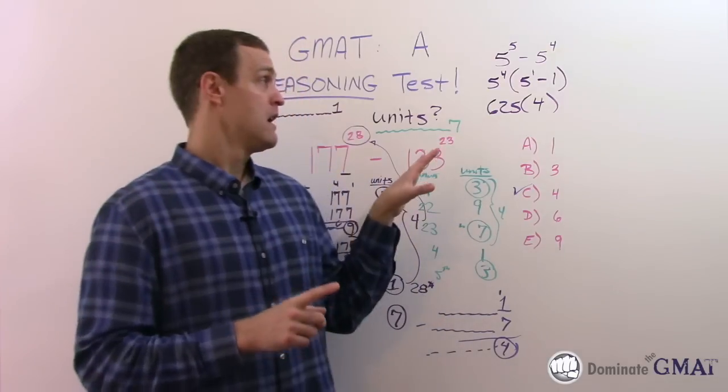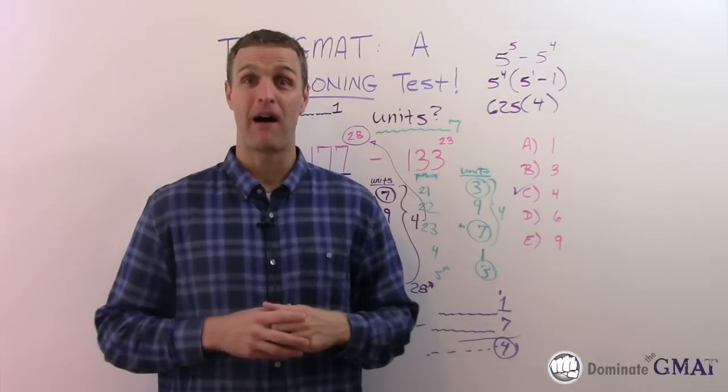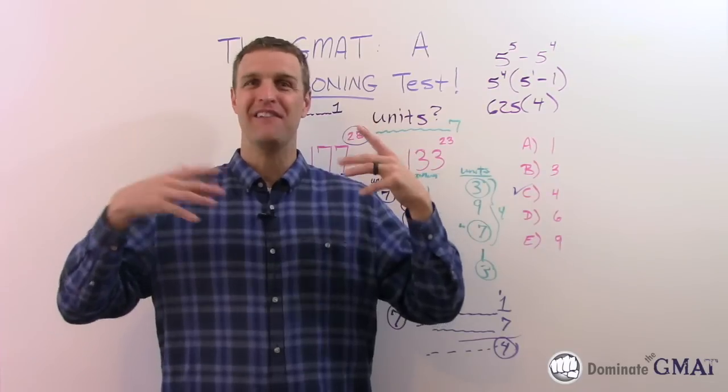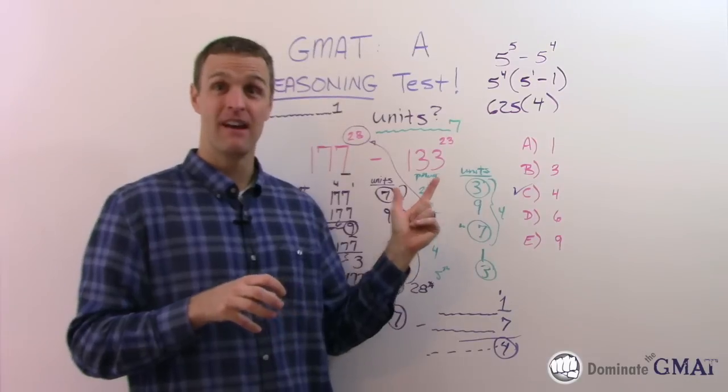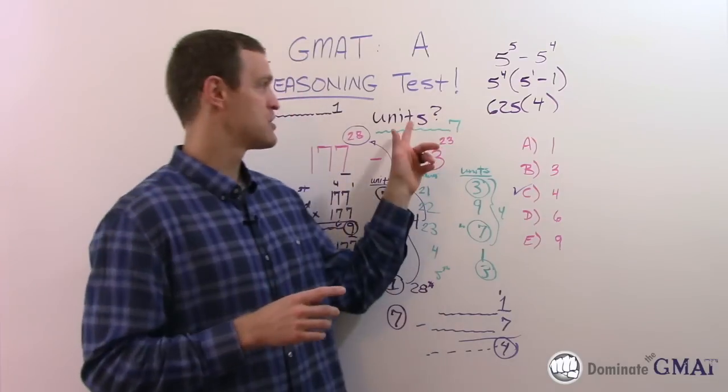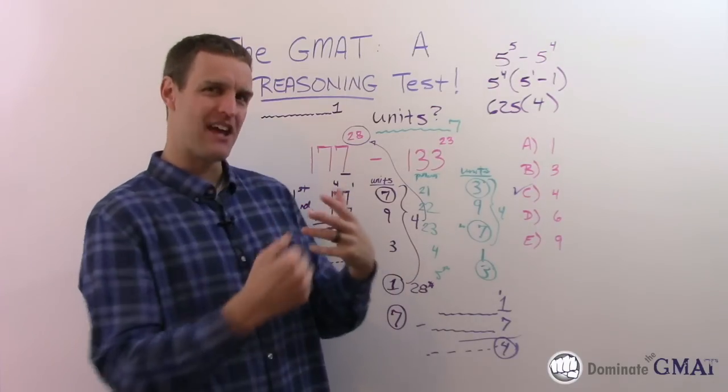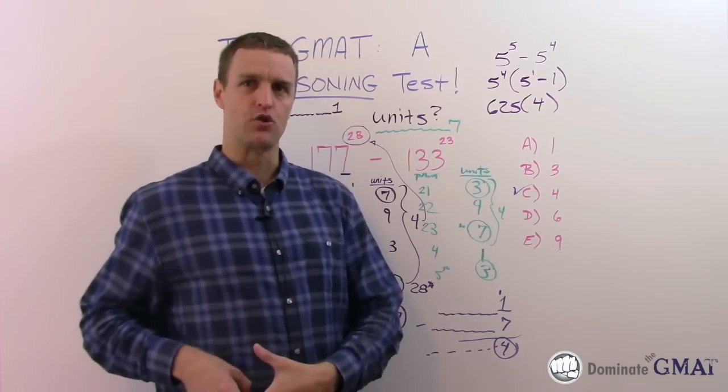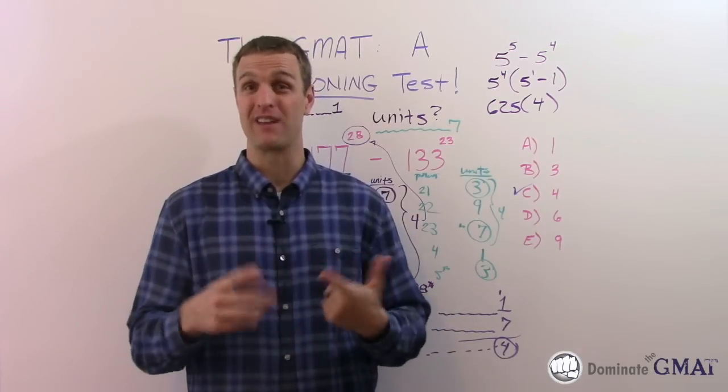The first thing I would say is just being exposed to more of these questions, whether you have a coach, tutor, or take my course. Seeing stuff builds up your inventory of similar questions you can pull from. Now that you've seen this, you should be able to do okay on these types of unit digit questions on the GMAT - they all work the same way. Forget the rest of the big stuff, all that matters is the unit's digit when multiplied. So exposure is one way to learn to reason better.